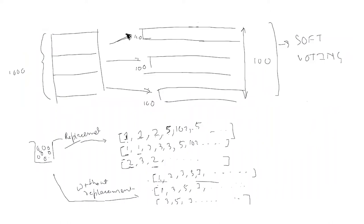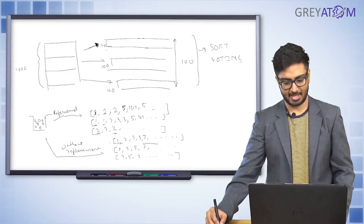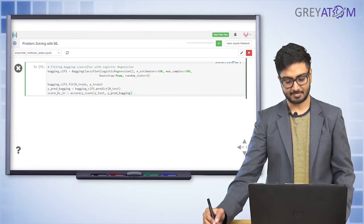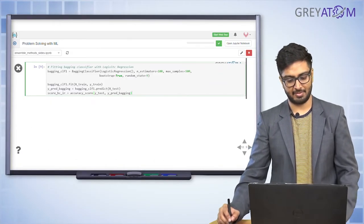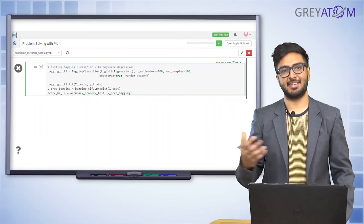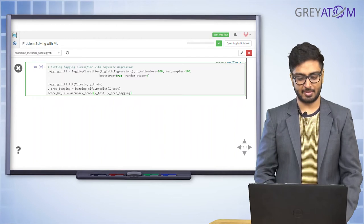The n_estimators parameter specifies how many splits of the data you want, and max_samples specifies how many data samples you want in each of those splits. Then you call bagging_clf.fit(X_train, y_train) — same uniform API as any other classifier. After training the bagging classifier, the accuracy score is stored for comparison.